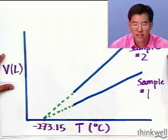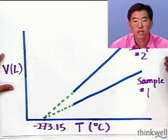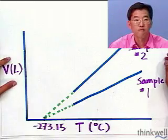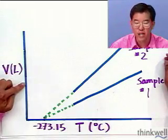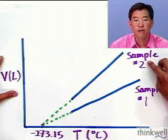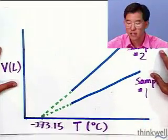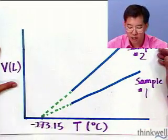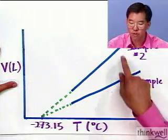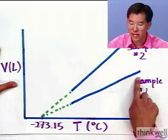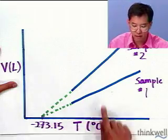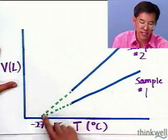So here I've plotted somewhat qualitatively the relationship that he discovered, which is we have plotted the volume of a sample, and I've got two samples, sample one and sample two. These could be different gases, they could be different amounts of gases. The point is that as you cool them down, if you measure the volume of the gas as a function of the temperature in degrees Celsius, what happens is they eventually get down towards zero.